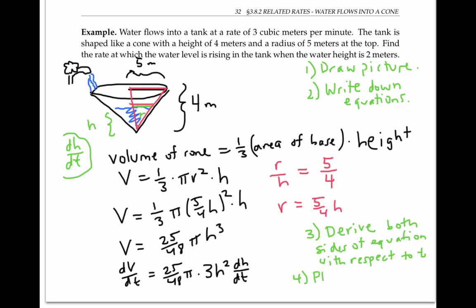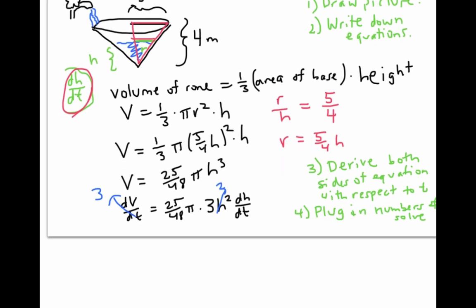Now let's plug in numbers and solve for the quantity of interest dh/dt. From our problem, we know that water is flowing into the tank at a rate of three cubic meters per minute. So dV/dt is three. We're asked to find the rate at which the water levels rising when the water height is two meters. So that's when h is two. Plugging in those values and solving for dh/dt, we get dh/dt is equal to three divided by 25/48 pi times three times two squared, which is 12 over 25 pi meters per second, or about 0.15 meters per second.